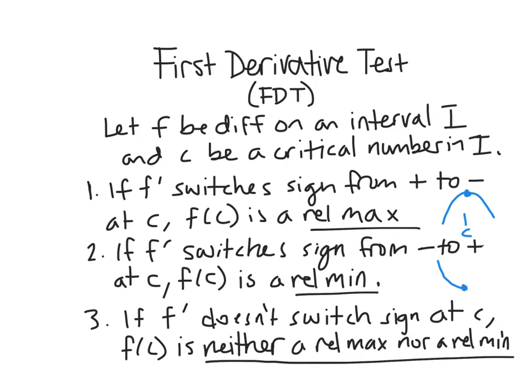The opposite would be if we switch signs from negative to positive. So we went decreasing, we hit this point, and then we go to increasing. And so here it's a relative min.